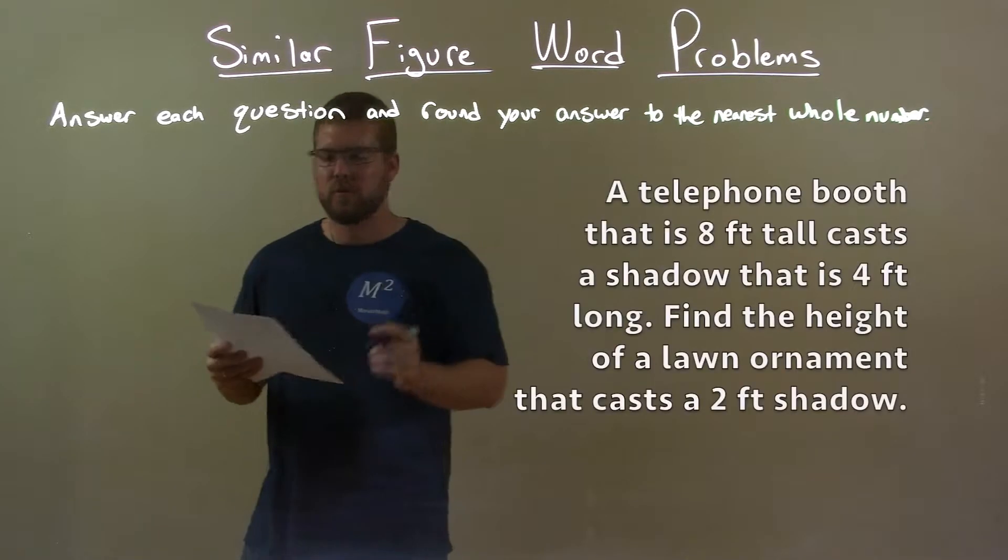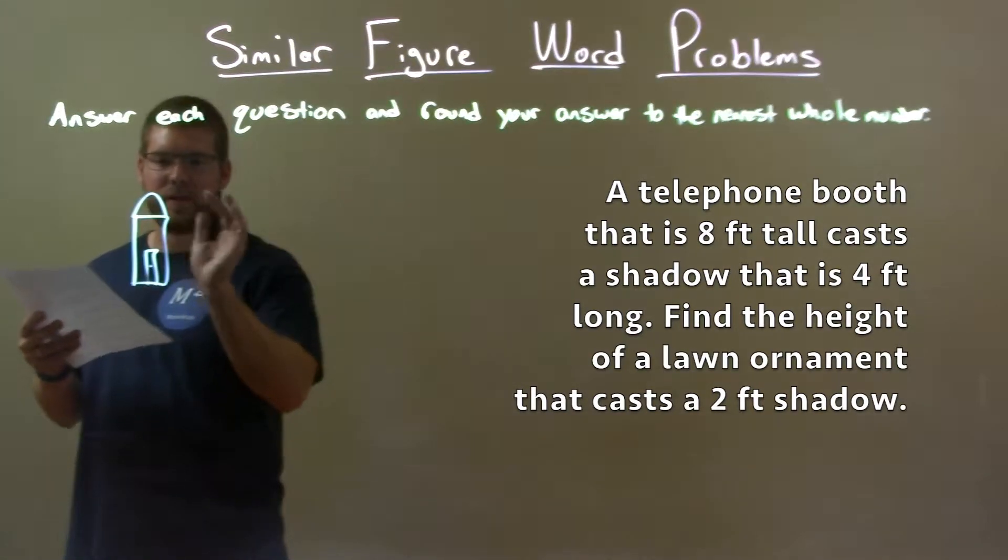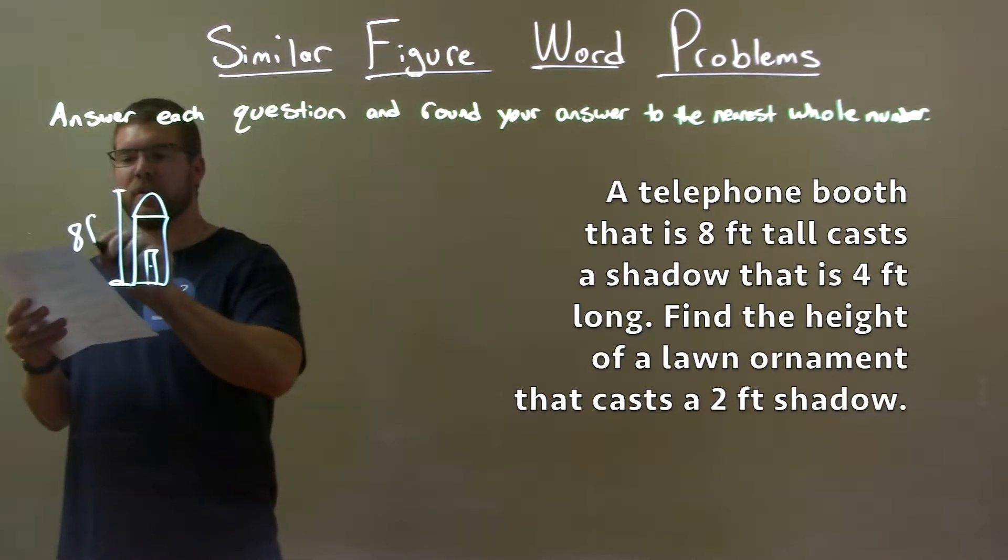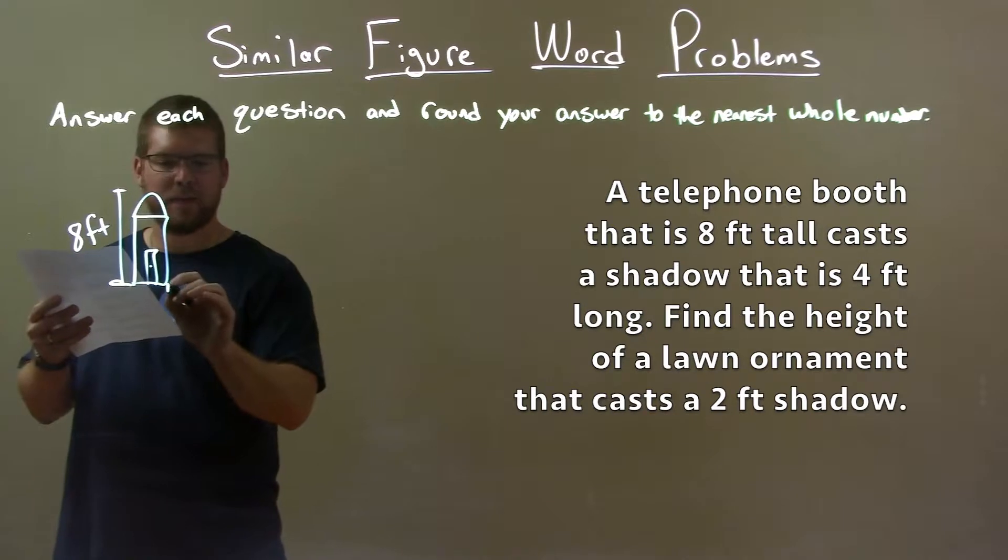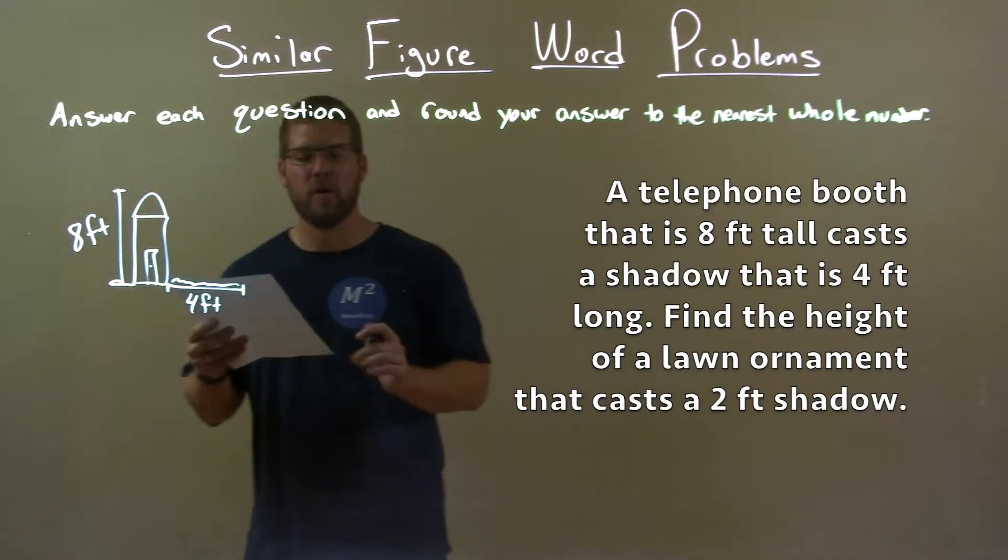So let's go draw a picture. We've got a telephone booth right here, a little top there, a little dome, a little door, and that's good enough. This tells us that the height here is 8 feet. We've got 8 foot height and its shadow length, and the little shadow there is 4 feet. So the shadow length is 4 feet long.